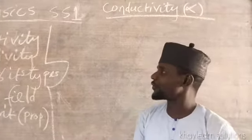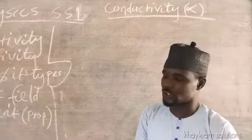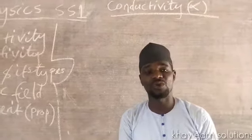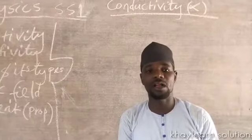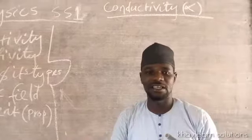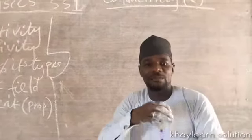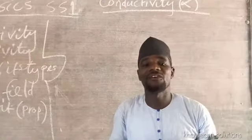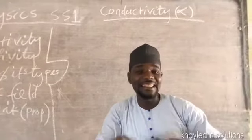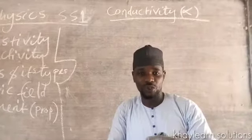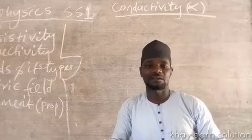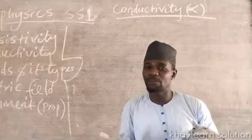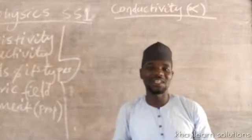We are going to explain conductivity. Conductivity is just the reciprocal of resistivity. When I say reciprocal, I mean the opposite of resistivity. If resistivity is the ability to resist or stop the flow of electric current in a conductor, then conductivity is the opposite — it is the ability of a substance to allow the flow of electric current through itself. The strength to which a conductor allows the passage of electric current is what is called conductivity.